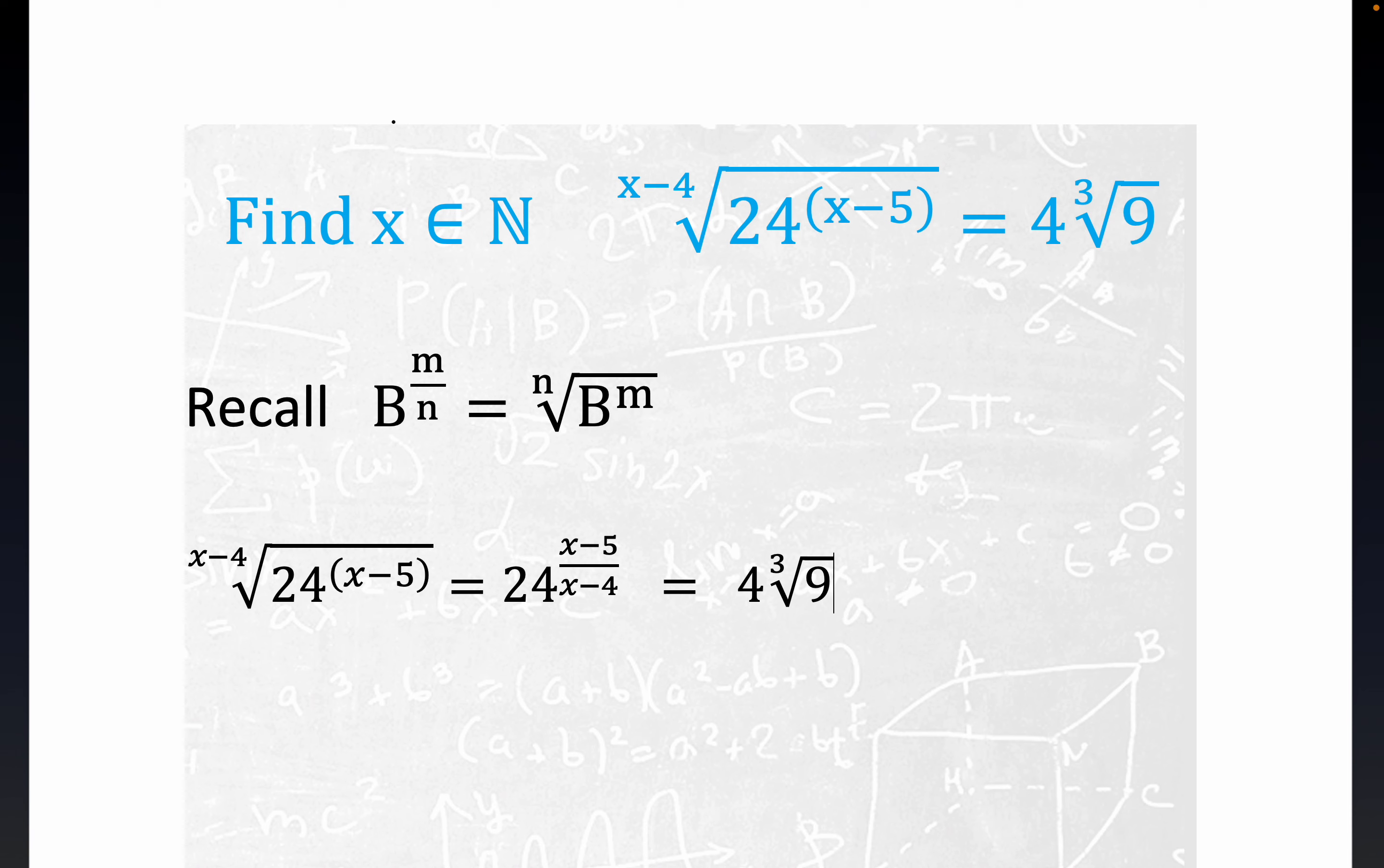We have a variable or an index radical equation here with a variable index. Now by the natural numbers I do mean just the set of numbers one, two, three, forever and ever ad infinitum.